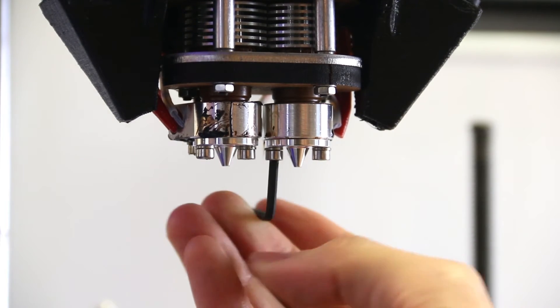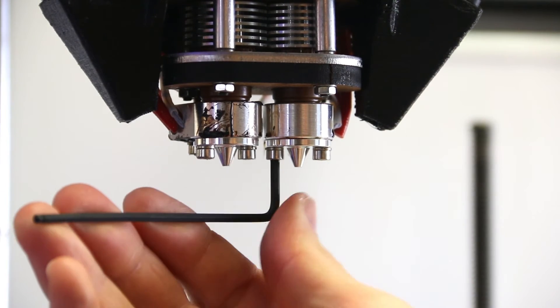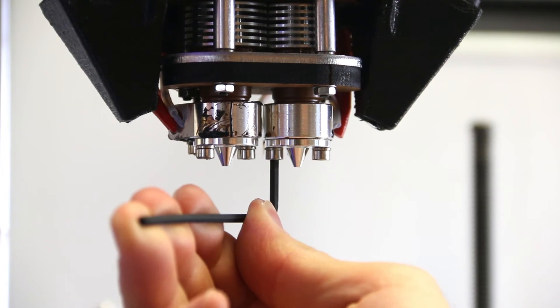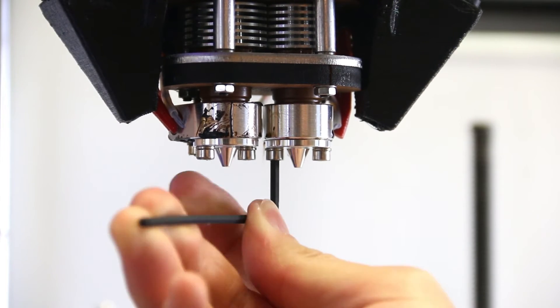Use the torque end of the Allen wrench to secure the nozzle in place. Be careful not to over-tighten the nozzles. The heating block should not turn during the tightening process.